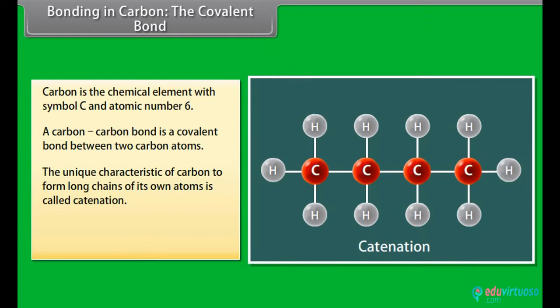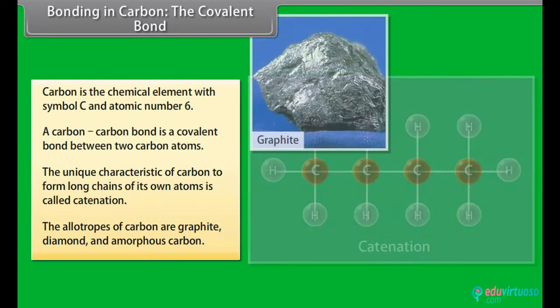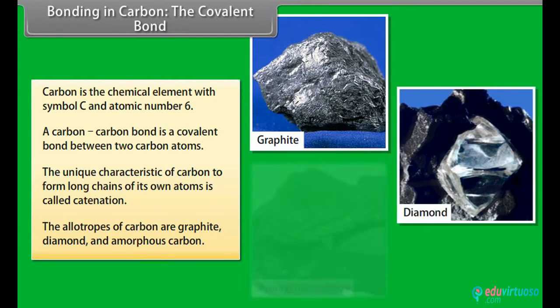Carbon also has the unique characteristic to form long chains of its own atoms. This property is called catenation. The allotropes of carbon are graphite, diamond, and amorphous carbon.